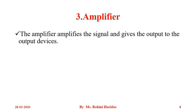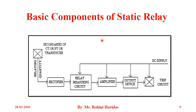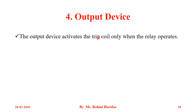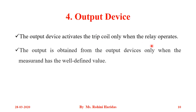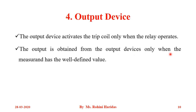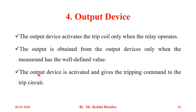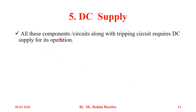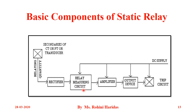The next component is the amplifier. The amplifier amplifies the signal and gives input to the output device. The output device activates the trip coil only when the relay operates. The output is obtained from the output device only when the measurement has a well-defined value, and the output device gives the tripping command to the trip circuit. All these components, along with the tripping circuit, require a DC supply for operation.